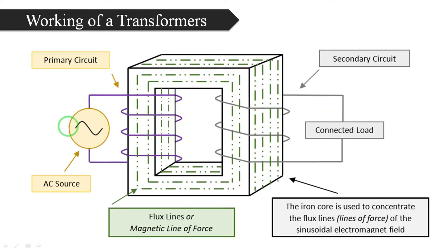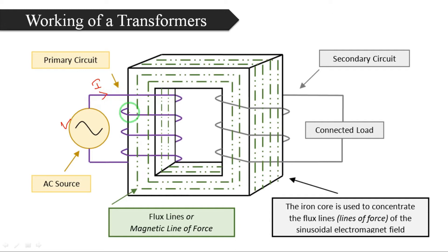When an AC source is connected to the primary winding, AC voltage is applied to the primary winding. Then alternating current will pass through the primary winding. When alternating current passes, alternating flux will be produced across the winding.